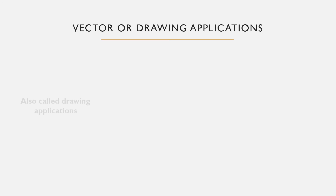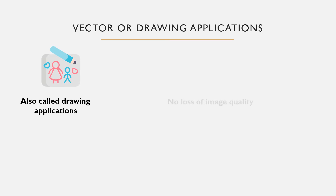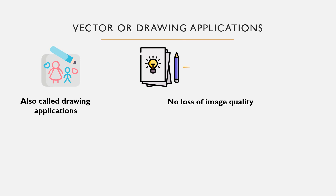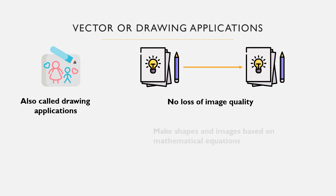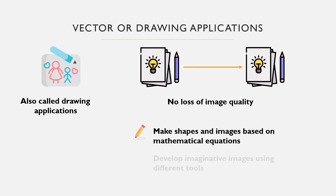Vector or drawing graphic packages. A vector application software is also called a drawing computer graphic package. They are so called because they can be used to create 2D and 3D objects with utmost clarity. Vector graphic packages are used to make parts, points, lines, curves, and shapes to create images, and are usually based on mathematical equations. Drawing applications allow users to develop creative drawings from different tools such as shapes, smart art, freehand drawings, and color adjustments.